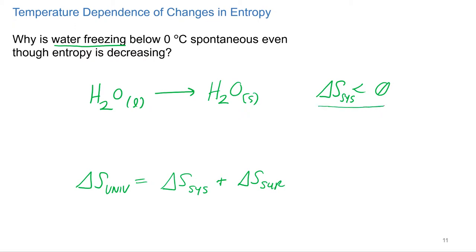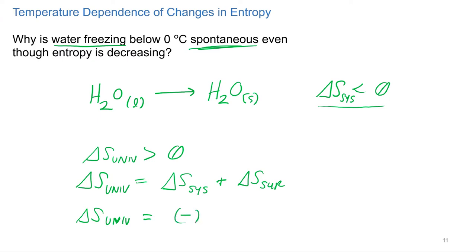We know that delta S for the system is negative. But for this to be spontaneous — and it is — delta S of the universe has to be positive. We have to follow the law. So far we've got a negative number from the system. That means the entropy of the surroundings has to be positive for this to be spontaneous.